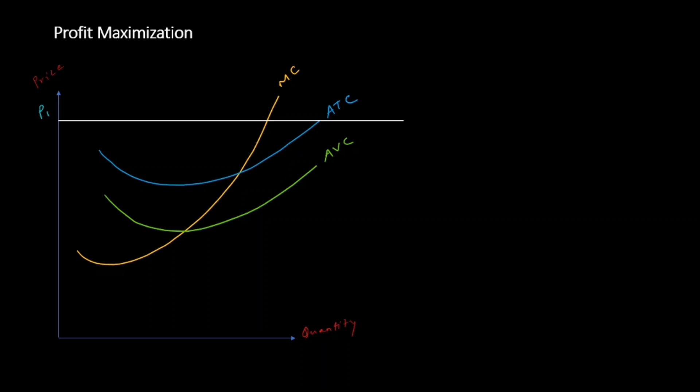P1 is my marginal revenue — the additional revenue I generate when I sell each additional unit. I should continue to produce as long as marginal revenue is higher than marginal cost. The most optimal point of production is where marginal revenue equals marginal cost, because producing beyond that means each extra unit costs more than the revenue it generates. I mark this optimal quantity as Q1.